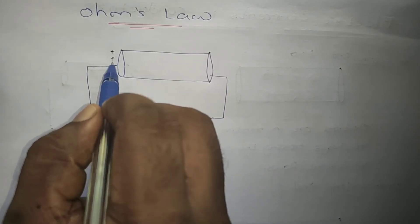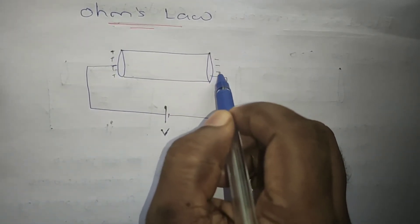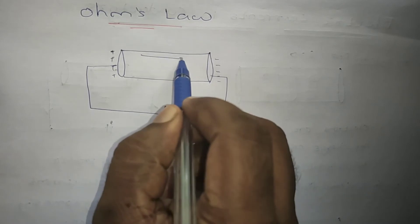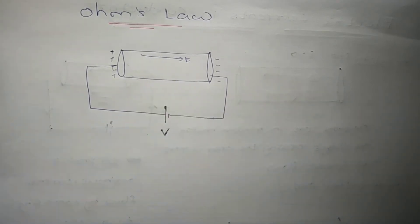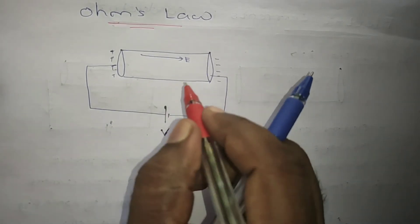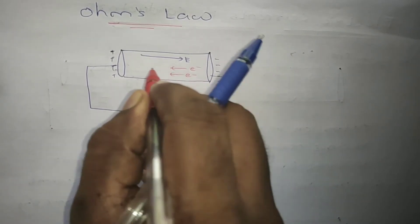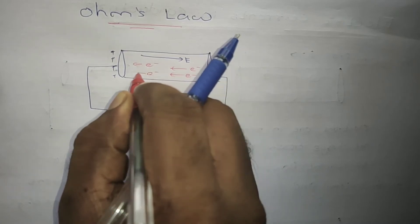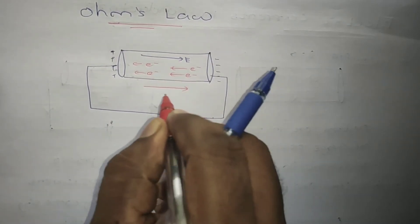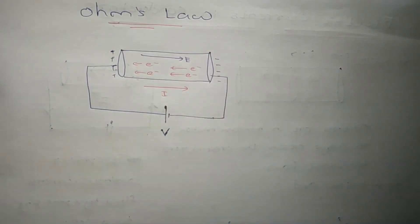This electric field allows the electrons to move in a single direction, so there is a current that will flow in the opposite direction, or in the same direction of electric field. That means we studied about when the potential difference is applied there is a current that will flow.